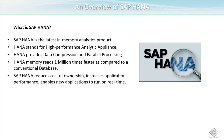SAP HANA memory can read data much faster than other databases because of in-memory storage. SAP HANA will reduce the cost of ownership, increase application performance, and enable new applications to run in real time. The storage is in-memory, and both column-based and row-based storage are possible, making it much faster than traditional databases.